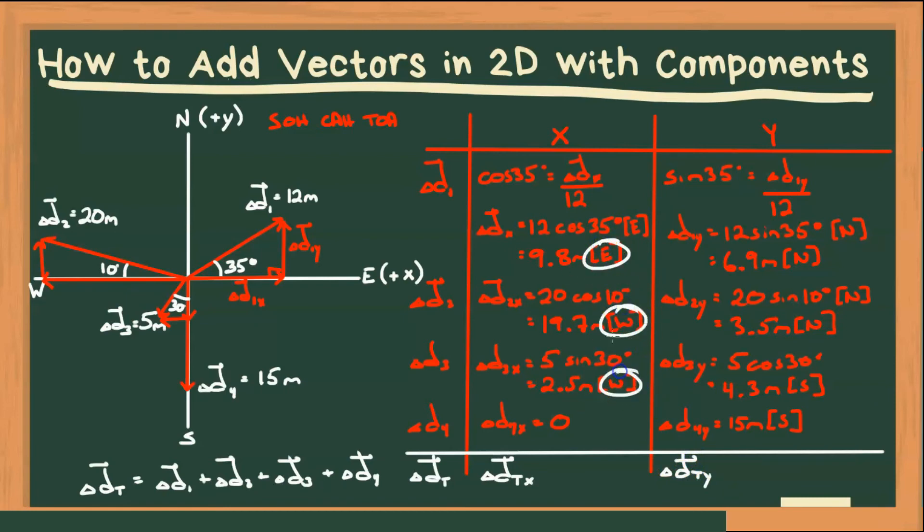What we can do is change this first one to be negative 9.8 meters west. So now all the directions are west, and if we add them, we will get a total of 12.4 meters west.